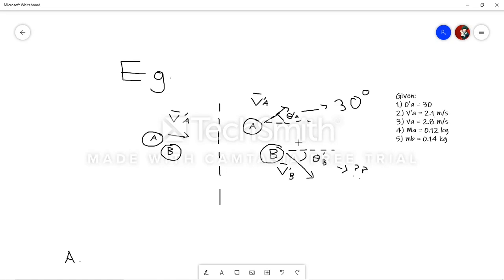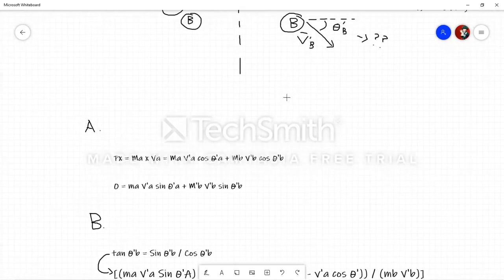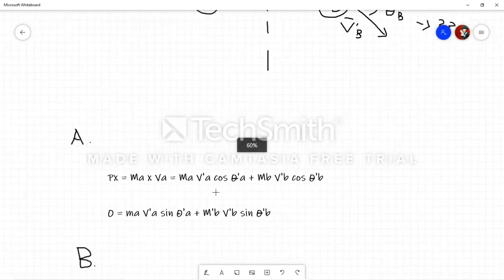Okay, so let's go to part A of the question first. Now, part A says that we have to give them two formulas that we can derive from the question. So, these are the two formulas we can derive. Now, these formulas are given. So, this formula says PX, or momentum, equals to MA times VA, equals to MA times VA. And then, the second formula is 0 equals to MA VA sine theta.